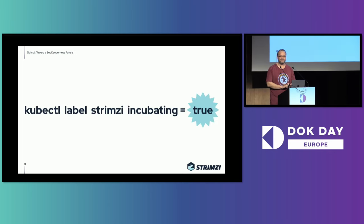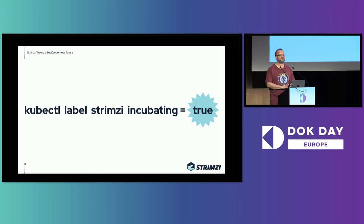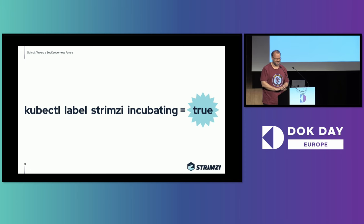Strimzi is all about running Apache Kafka on Kubernetes. Today I will be talking about the work we have been doing around removing the ZooKeeper dependency. But before we get there, a little project announcement: recently Strimzi moved from sandbox to incubation, so hooray — that's a big achievement for us.